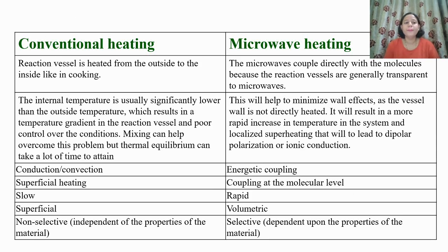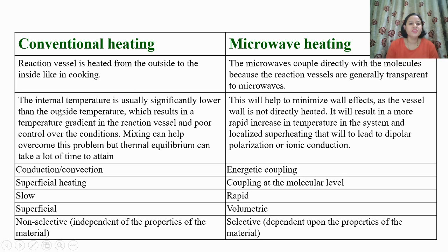Now let us compare conventional heating and microwave heating. In conventional heating, the reaction vessel is heated from outside to the inside, like in cooking. Whereas in microwave heating, energy couples directly with the molecules because the reaction vessels are generally transparent to microwaves. In conventional heating, the internal temperature is usually significantly lower than the outside temperature, resulting in a temperature gradient and poor control over conditions. Mixing can help overcome this problem, but thermal equilibrium can take a lot of time to attain.